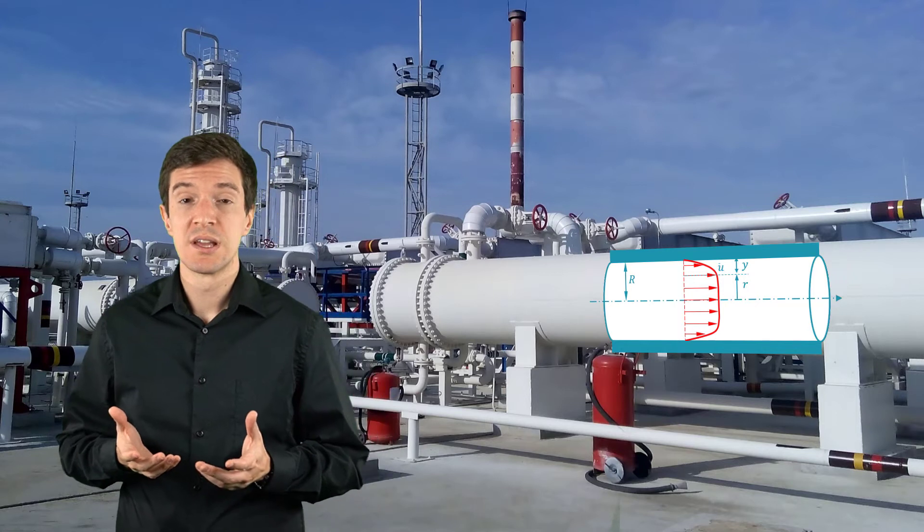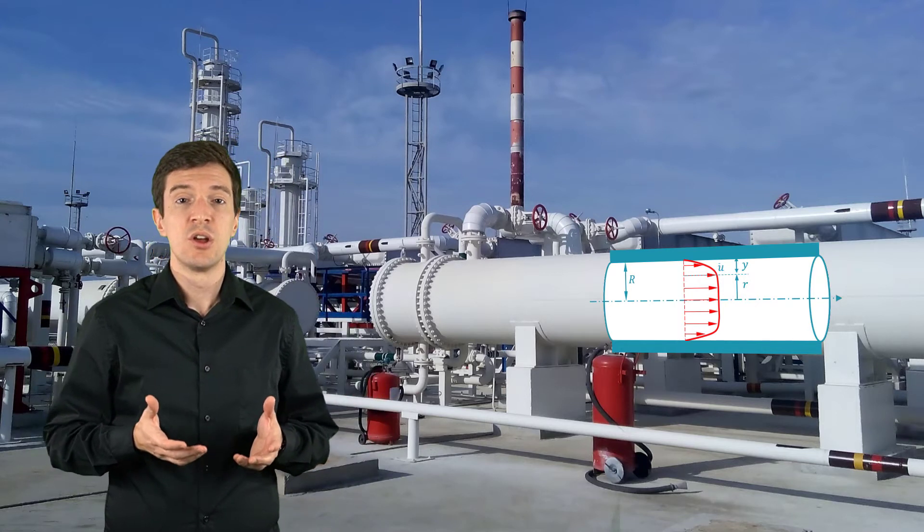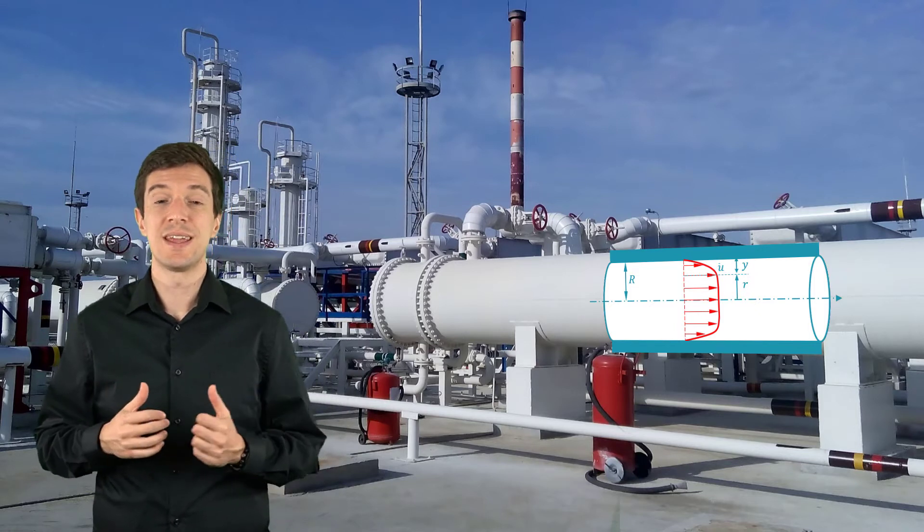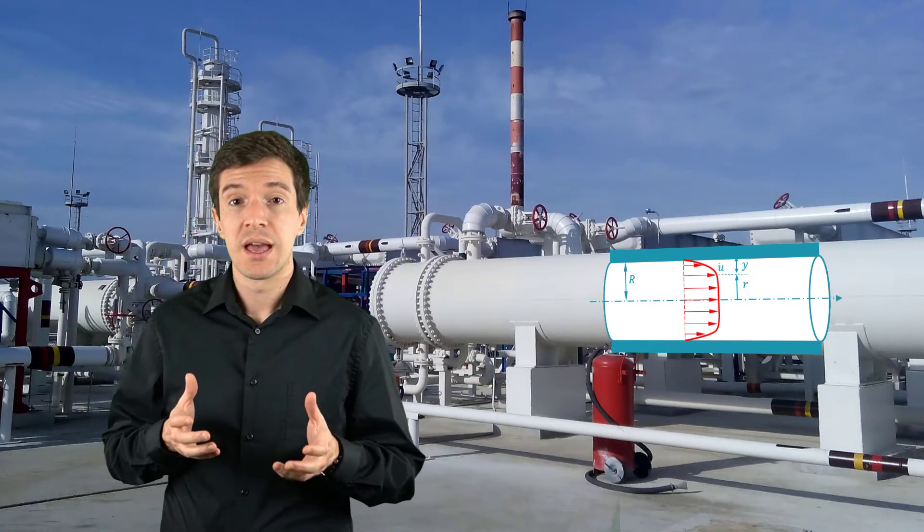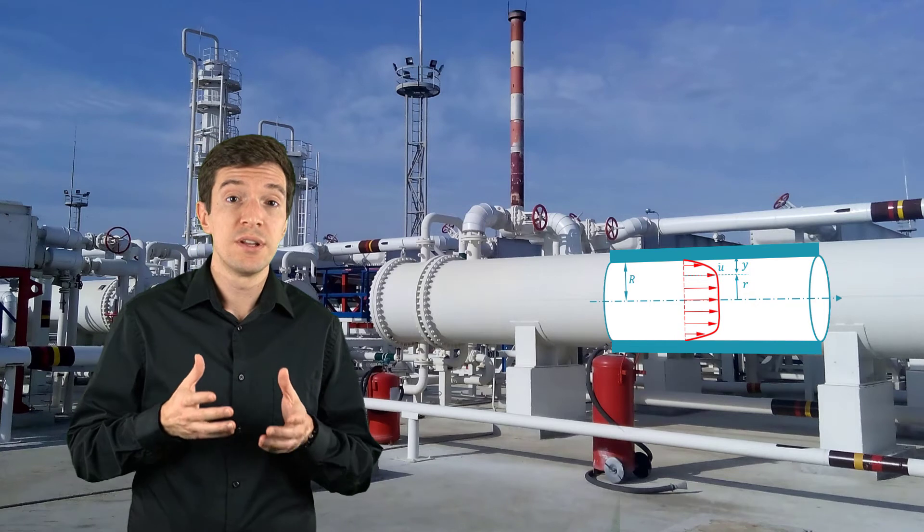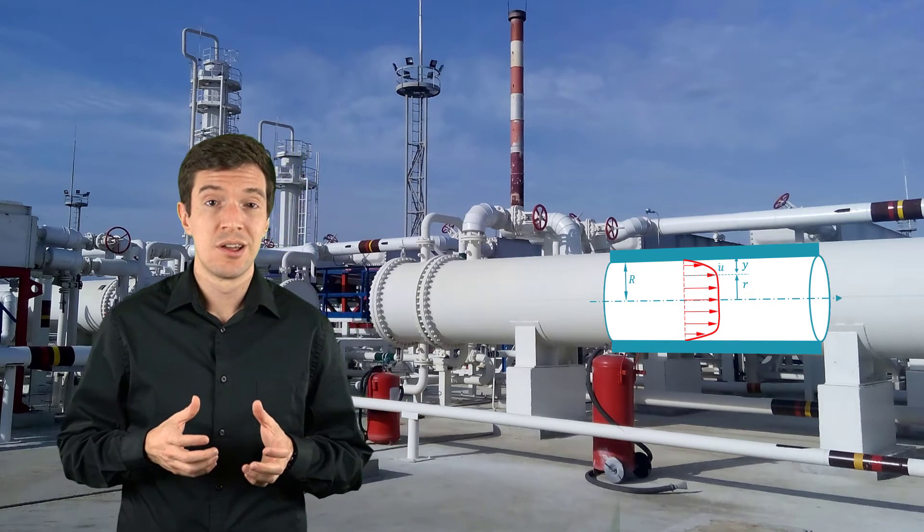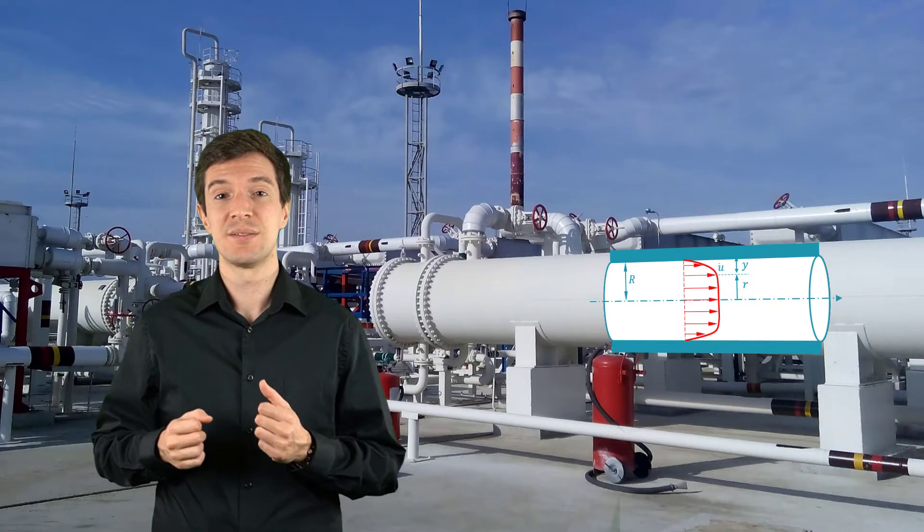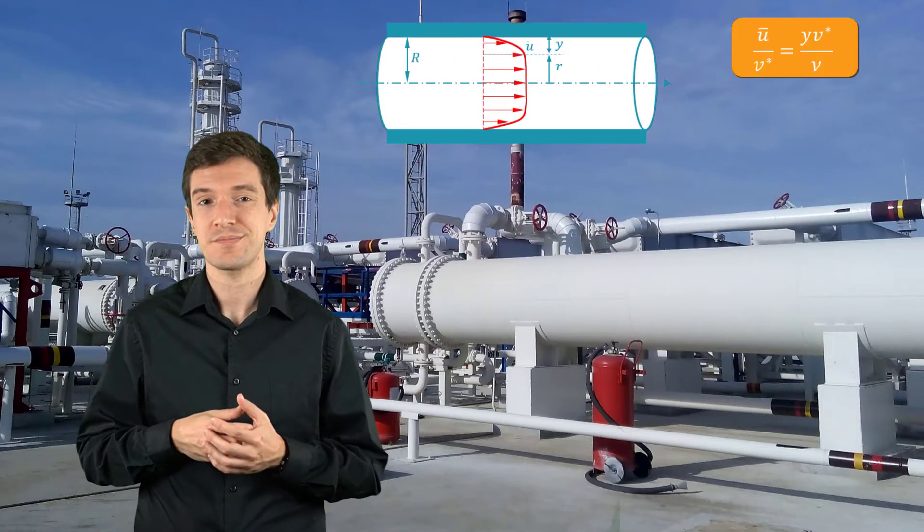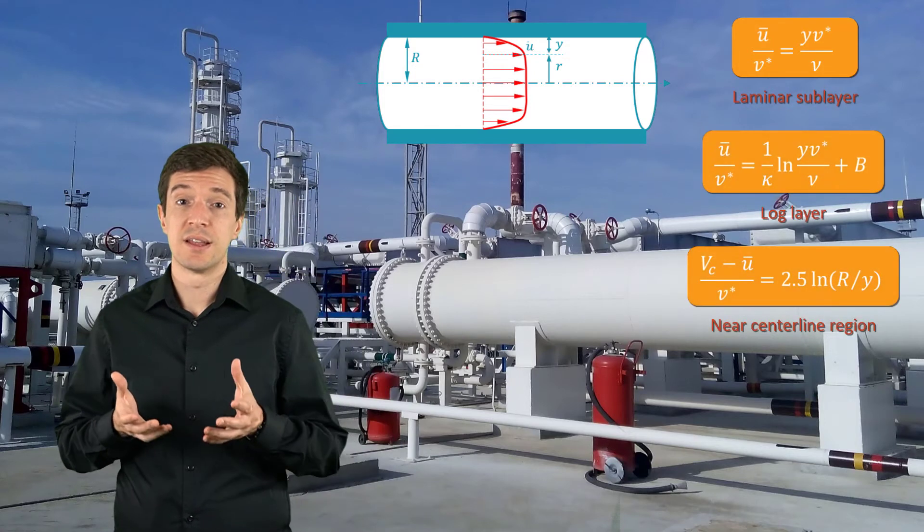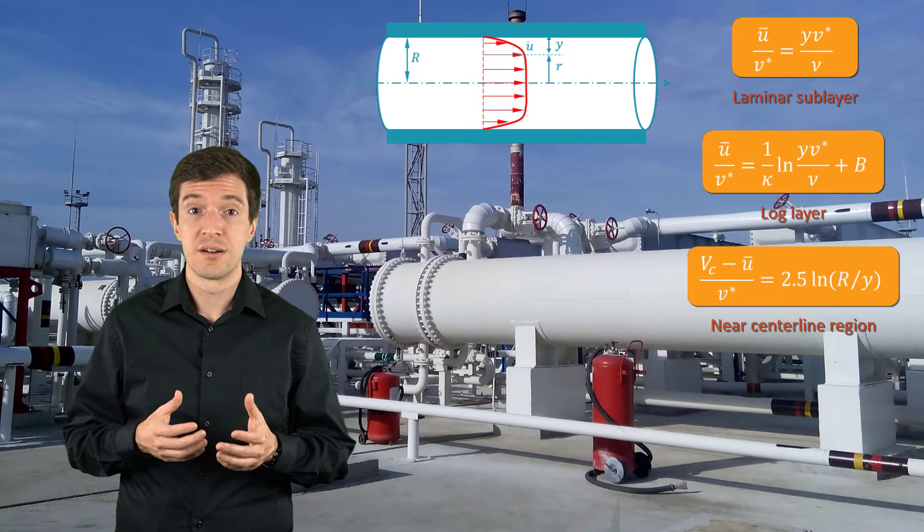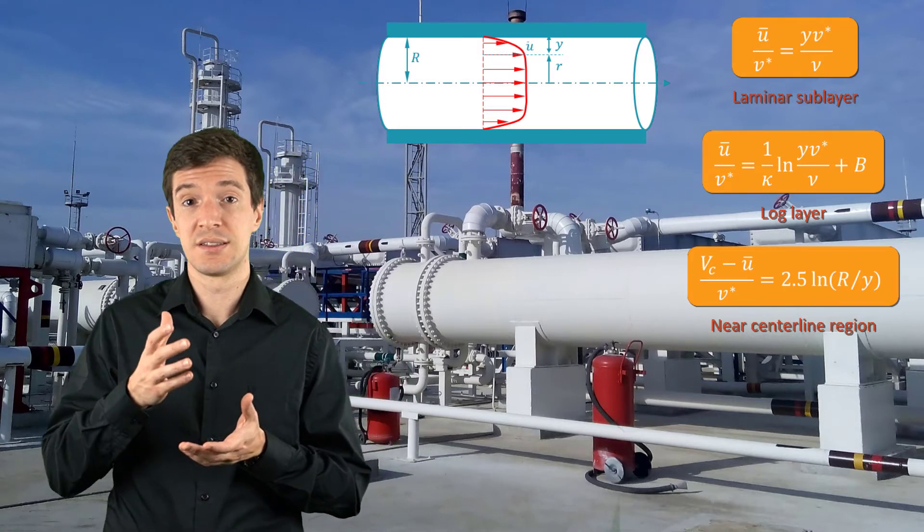For laminar flows it is possible to obtain an exact solution to this problem through the Poiseuille solution. However, for turbulent flows we cannot obtain an exact solution but only approximate expressions that can give us a reasonable velocity profile. For fully developed turbulent flows in pipes we can assume that the entire flow is affected by viscosity and that the velocity should follow the universal law of the wall. Hence, we will have a laminar sublayer really close to the wall, then a transition to the log layer and a specific profile near the centerline region.